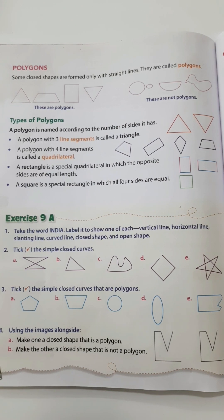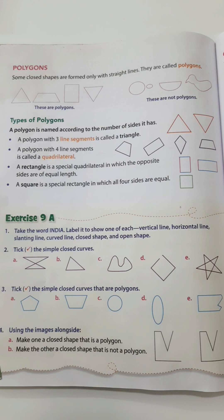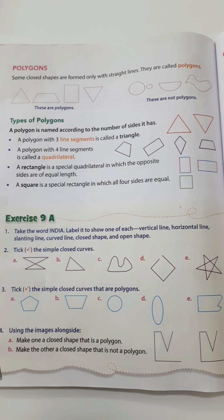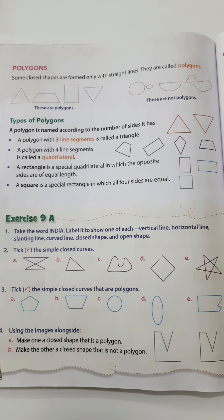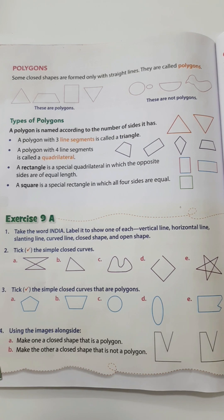See the second question: tick the simple closed curves. Option A is not a simple closed curve. Option B is a simple closed curve. Option C is a simple closed curve. Option D is not — even though it is drawn with straight lines, the starting and ending points are not the same. Option E is a star and it is crossing itself many times, so it is not a simple closed curve. The simple closed curves here are options B and C only.